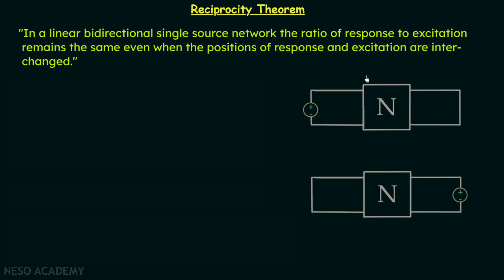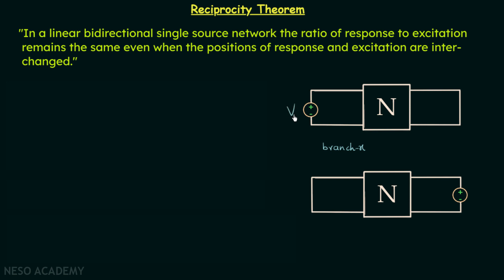To understand this statement, I have taken one network N. This network is a linear bidirectional network and in this network we have one independent source, and this is the only source present, so this network is a single source network. Now I will say this branch is branch X, and this particular voltage source is providing the voltage equal to V_x.